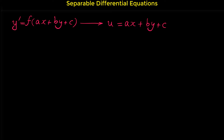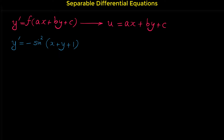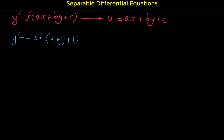Let me show you this by some examples. Our first example is y prime equals negative sine squared of x plus y plus 1. In this example, the function f is negative sine squared and ax plus by plus c is x plus y plus 1. So for solving this differential equation, we choose u to be x plus y plus 1.